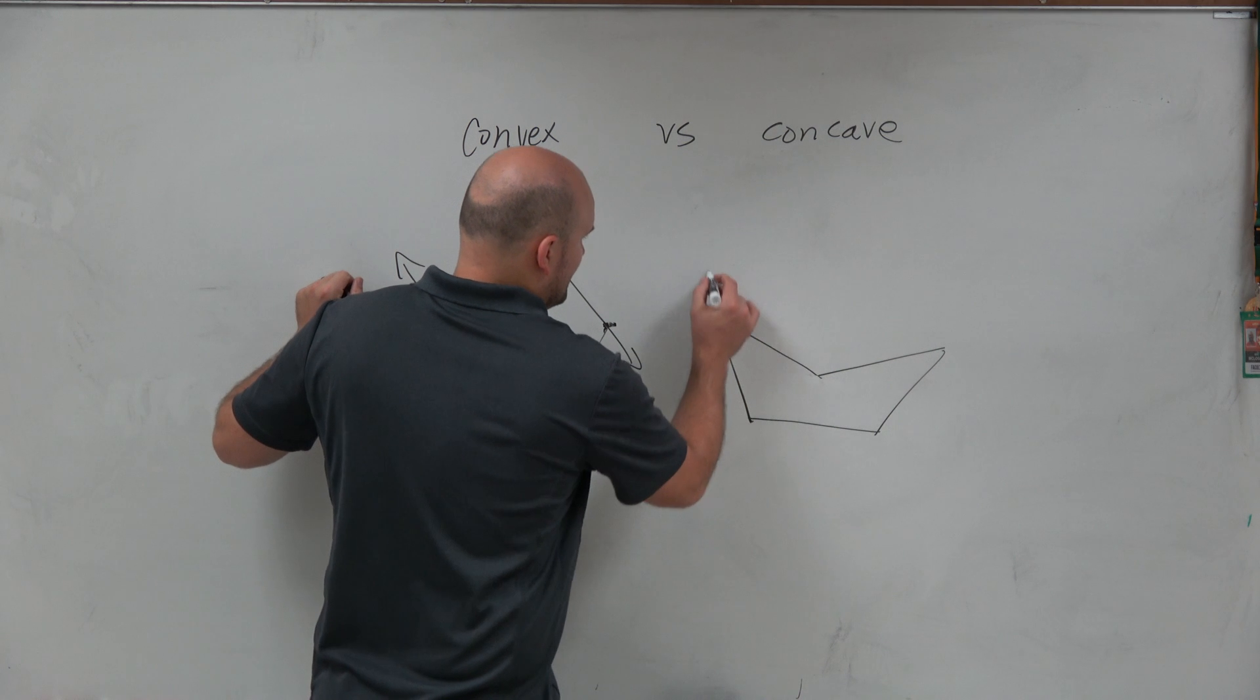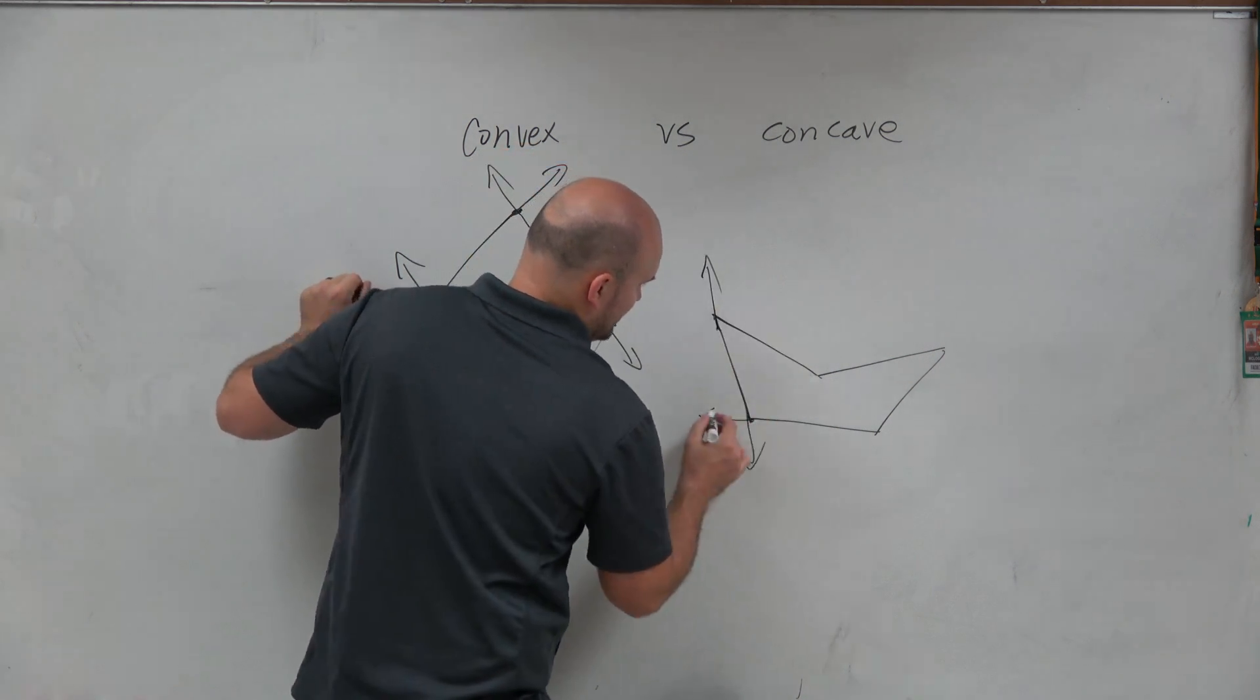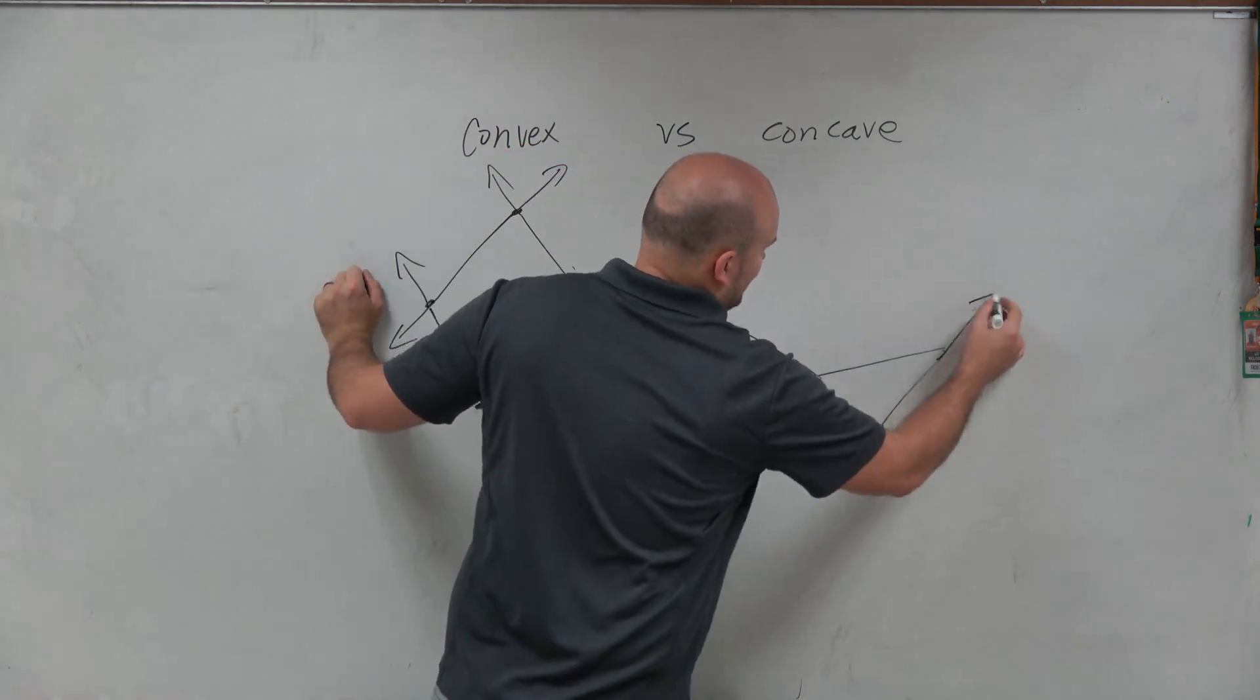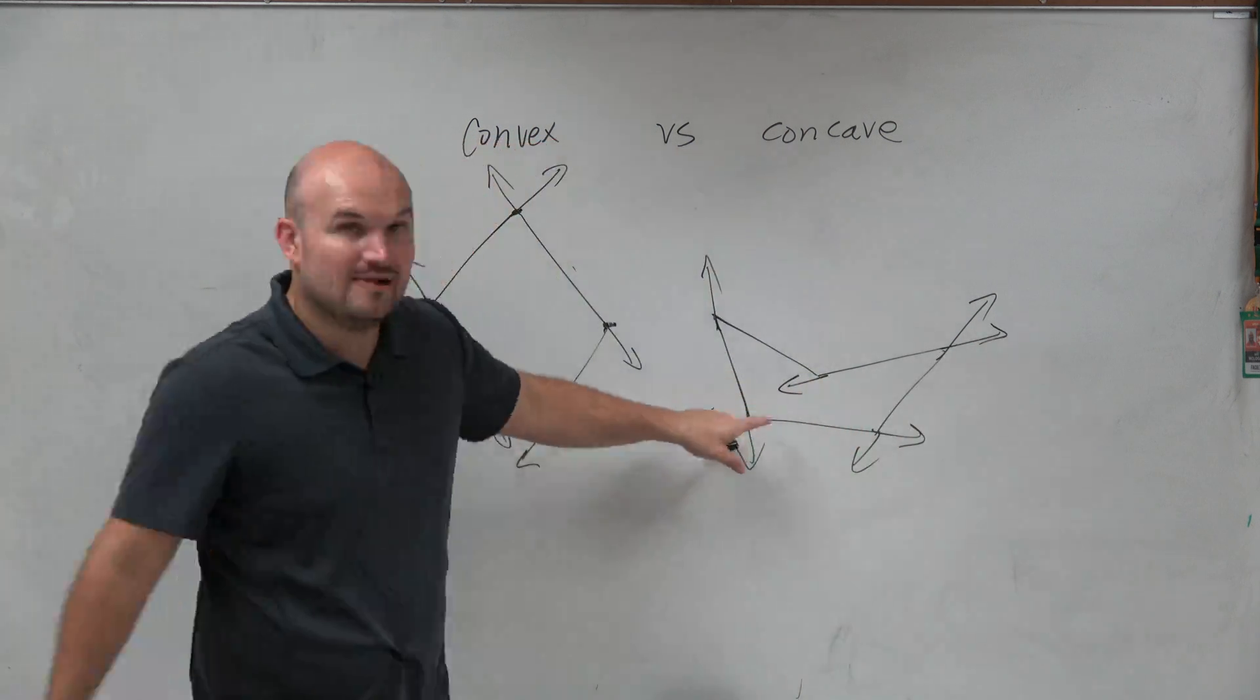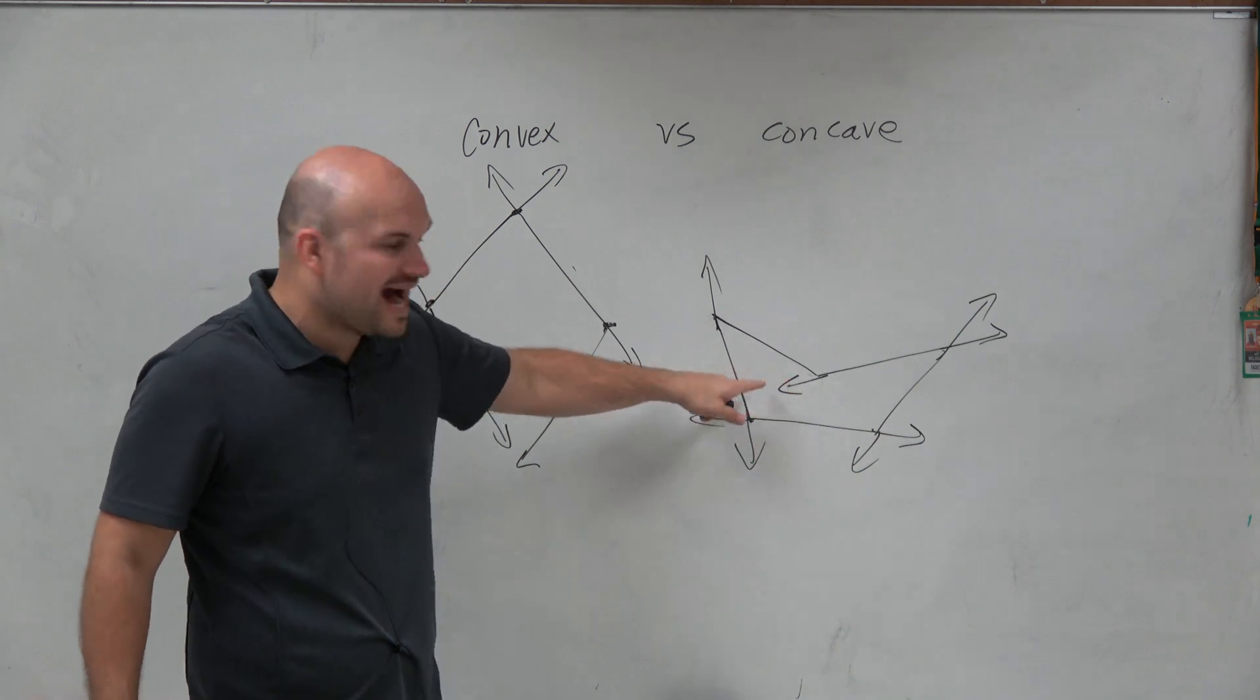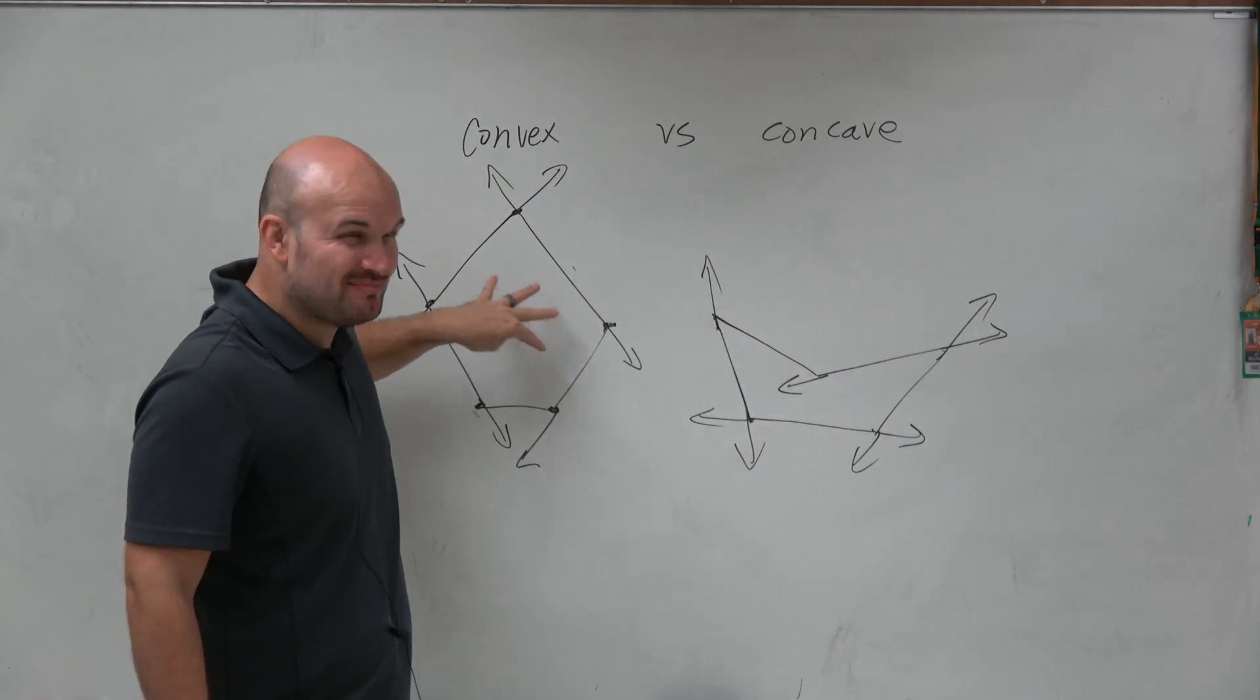Now again, you can see that extending these - this is okay, it's looking good. Not too bad. But then, once I extend here, now I have an extension that's inside of my polygon, where here it was impossible.